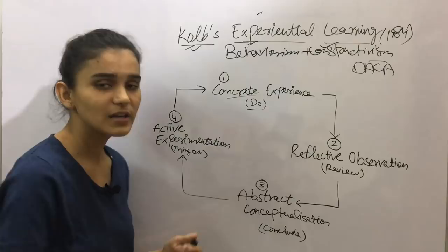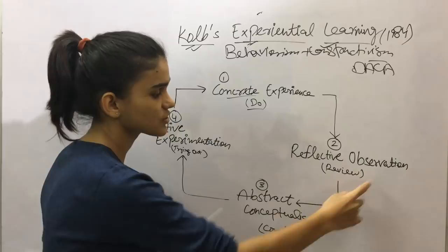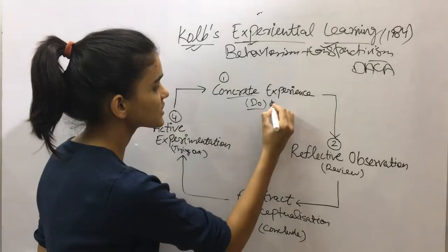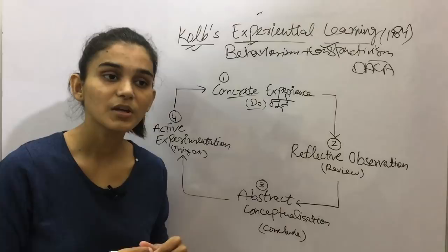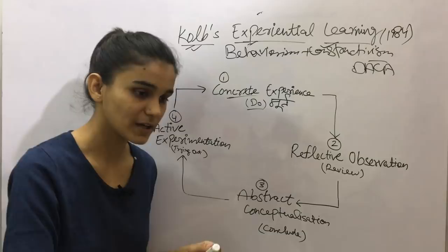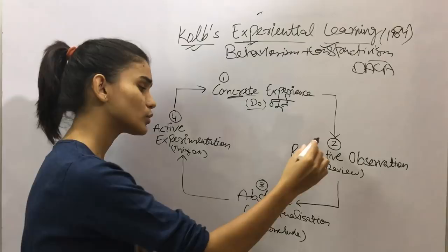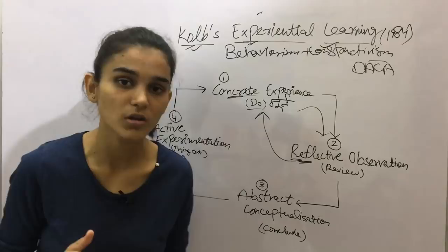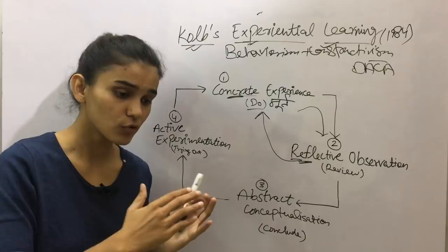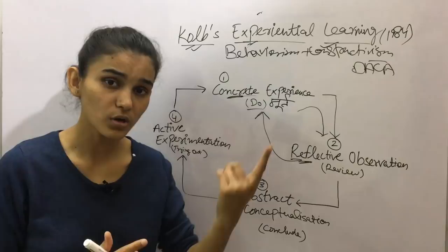The next step is Reflective Observation. After having the experience, you reflect on it. What could you have done better? For example, after a cricket match — that was the Concrete Experience — in your hotel room you think about the match: what activities did you do, where did you play well, where could you improve? You observe and reflect on what you were doing. This is Reflective Observation.